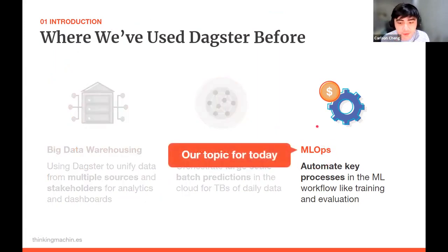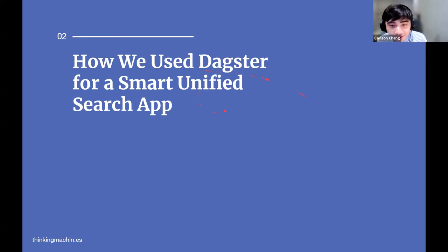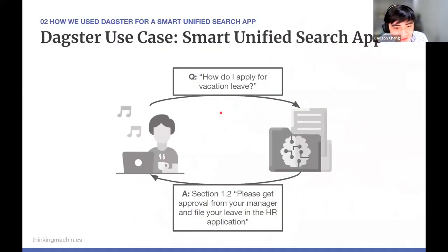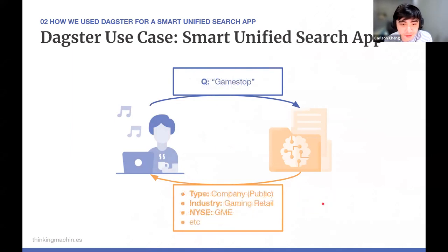We'll be focusing on the ML ops use case, mentioning one of our projects: building a smart unified search app. This app consolidates a number of data sources and allows users to search through these sources and get relevant information. For example, a user could ask the application 'how do I apply for a vacation leave?' and then our application, using ML algorithms, would give the most relevant section in the employee handbook highlighting the required steps. Use cases also extend to allowing users to query relevant entities like people and companies — for example, searching for a company like GameStop to get relevant information.